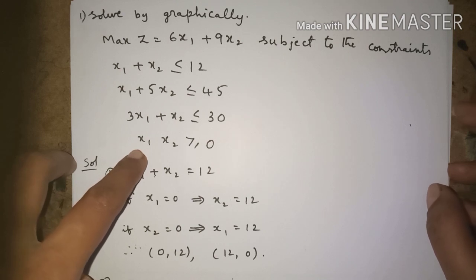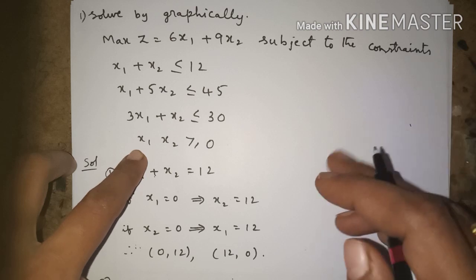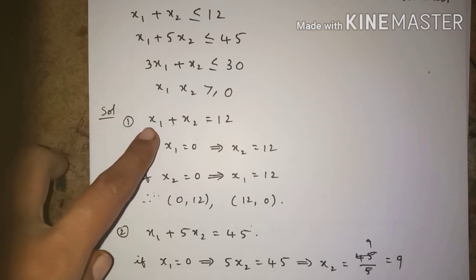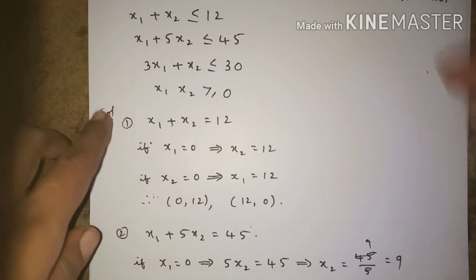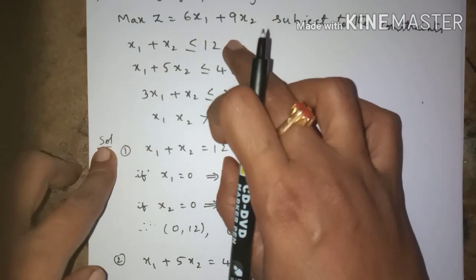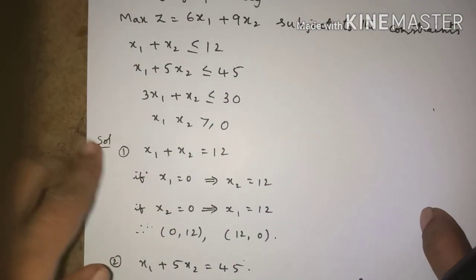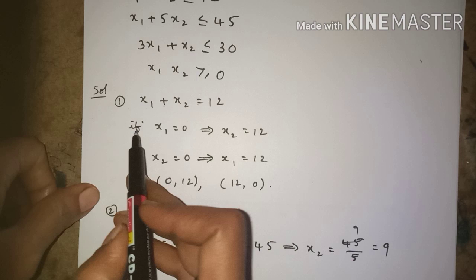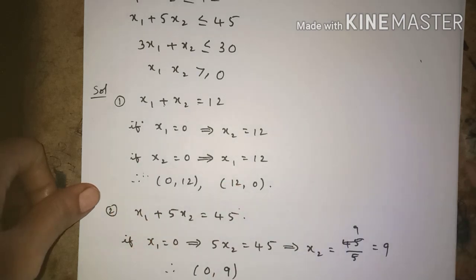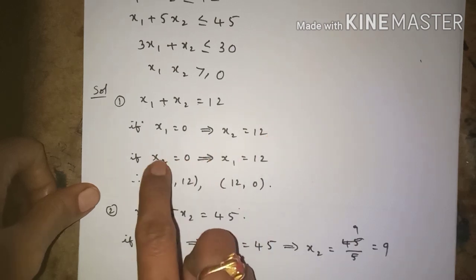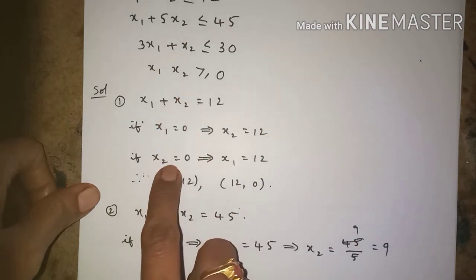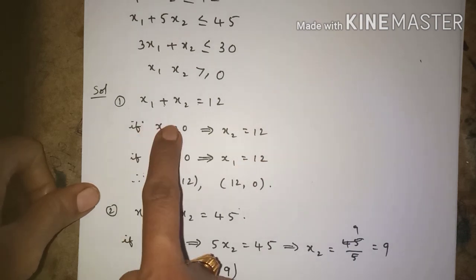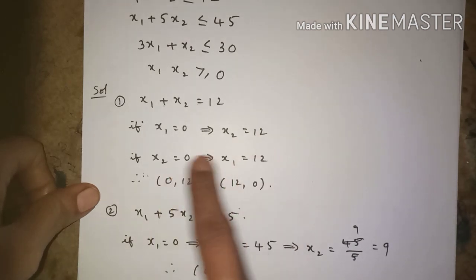To solve this problem using the graphical method, first we have to take all three constraints in equation form. Taking the first constraint: ignore the less than or equal to symbol and write x1 plus x2 equal to 12. If x1 equals 0, you get x2 equals 12. If x2 equals 0, you get x1 equals 12.